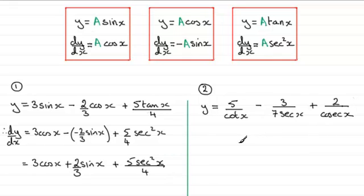In this second example I've introduced the trigonometric functions cot x, sec x, and cosec x. We need to tidy this up. We've got 5 over cot x. Now cot x is the same as 1 over tan x, so you've got 5 divided by 1 over tan x, which is exactly the same as 5 tan x.